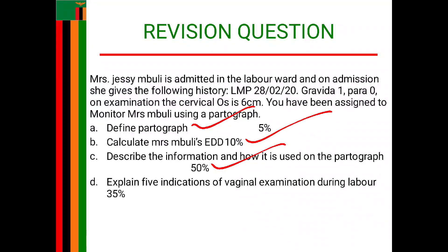On the partograph there are certain parameters such as the maternal part, then the part for progress of labor, and then the part for fetal well-being. If you want more information about the partograph, be sure to go through the partograph session posted on the YouTube channel, where you'll find the partograph tool explained as well.